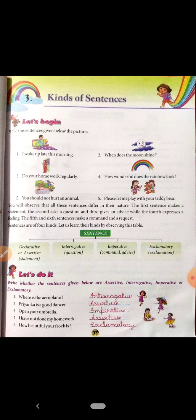This is a command. So what is it? Imperative. Next, fourth one: I have not done my homework. This is a statement. It is being declared that homework has not been done. What type of sentence is this? Assertive.